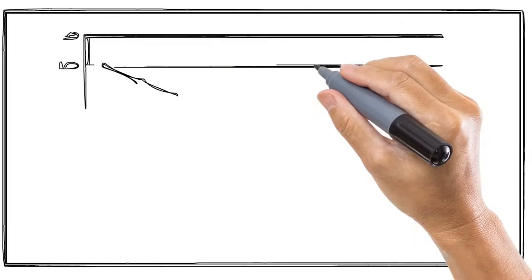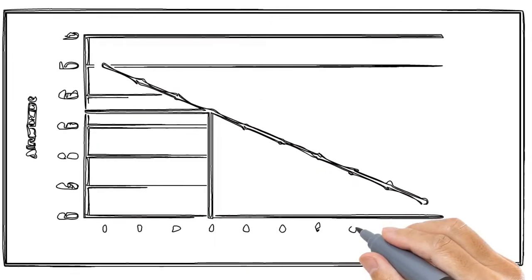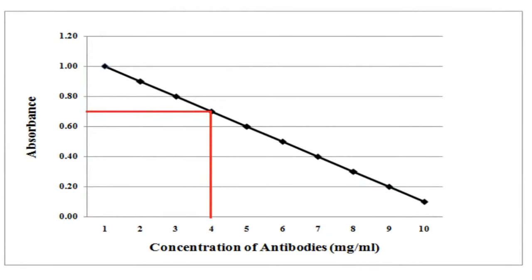The actual concentration of antibodies present in the sample can be determined by extrapolating the value of absorbance on the standard graph, like this. So in this way, the competitive ELISA is used to determine the concentration of antibodies.